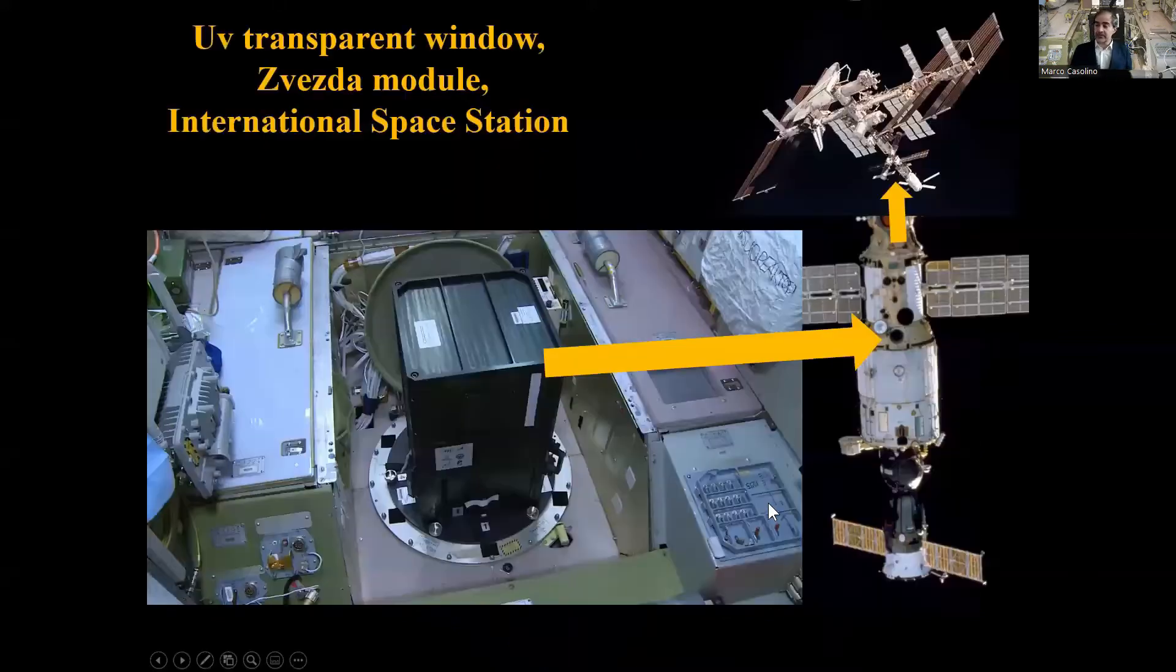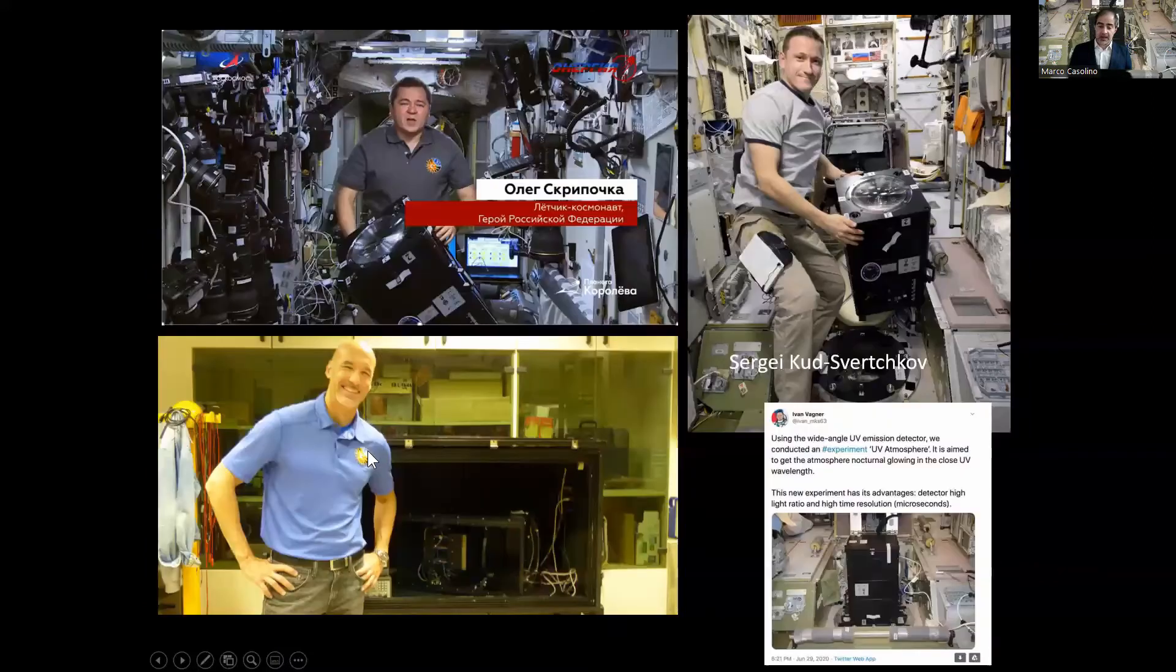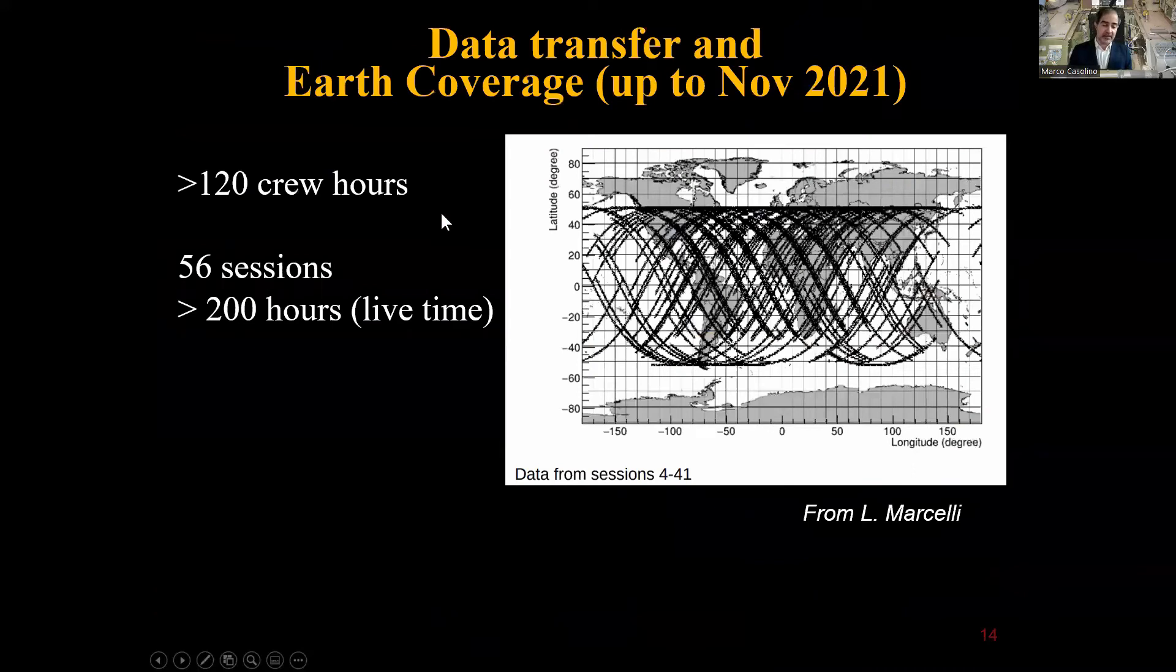The Zvezda module is in the velocity vector coordinates, the one which is most on the back of the International Space Station. There are a number of windows. This is the Zvezda module, this is the U.S. section, this is the Russian section. Ours is the most UV-transparent window which looks nadir. This is our detector placed in this window with an adapter. A number of astronauts have alternated in operating the detector. We started with our Italian Luca Parmitano, and a number of cosmonauts have alternated in operating the system.